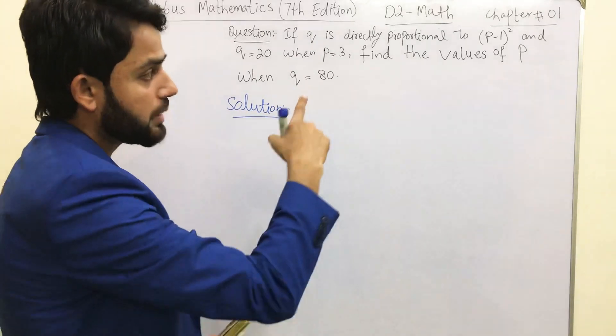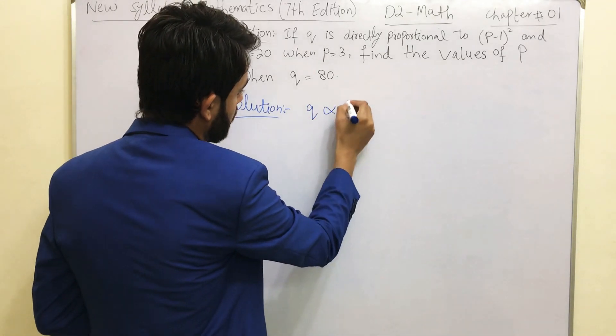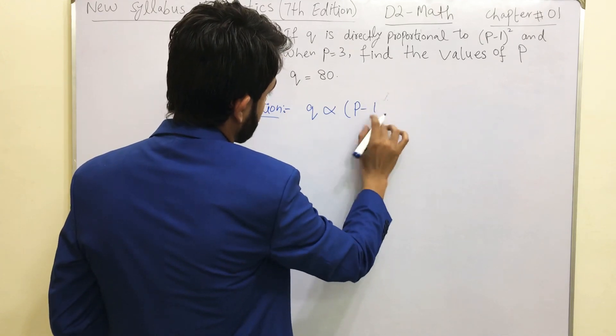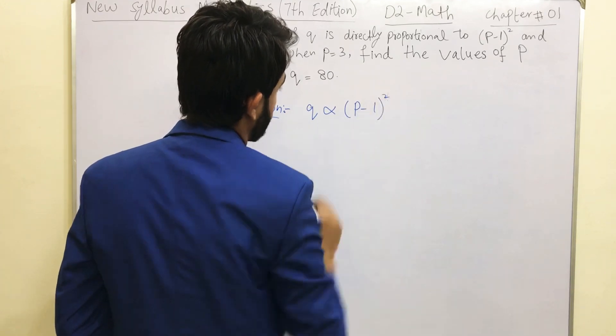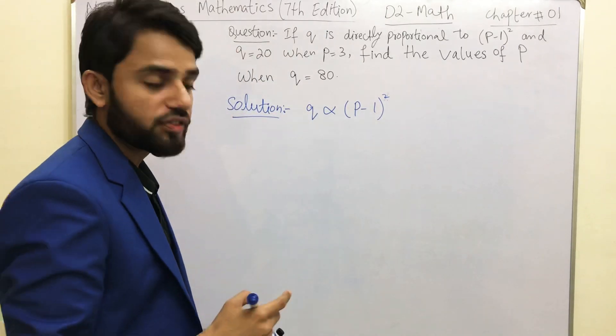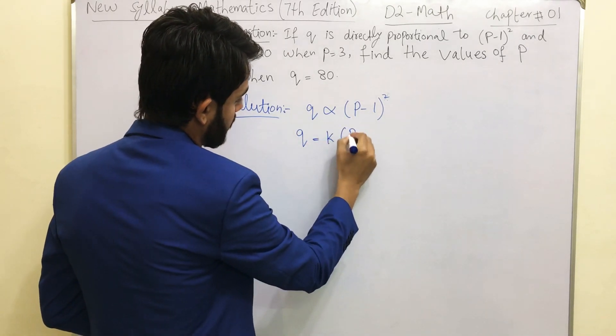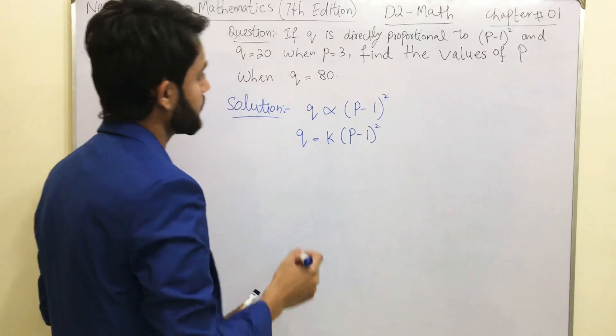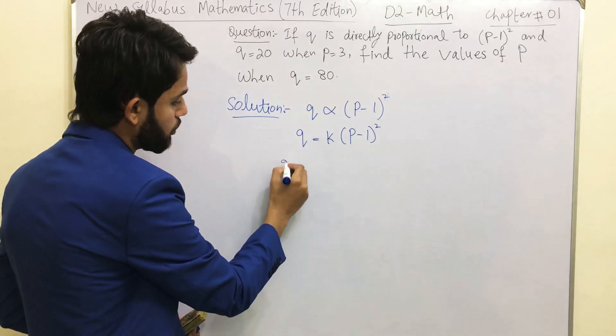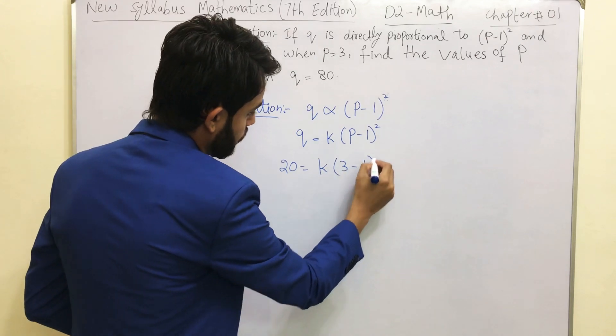If Q is directly proportional to (P-1)², and we have learned that in previous video this is the symbol of directly proportional. So like the question says (P-1)². Once we remove this directly proportional sign, you must need to introduce equals to and K: Q = K(P-1)². And it says Q equals to 20 when P is equals to 3.